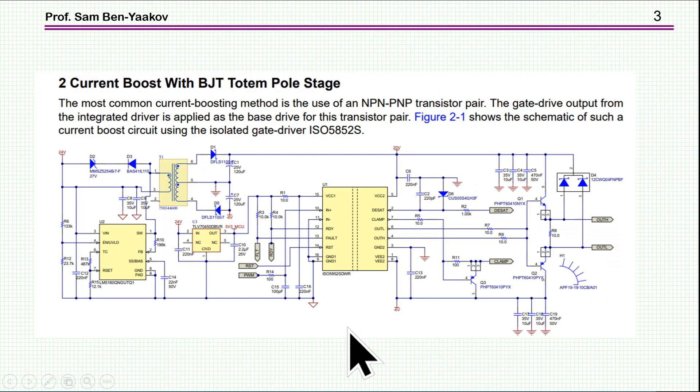Now this application note proposes two approaches for driving a high-power transistor. It's a MOSFET or IGBT. Transistor is here. Gate is here. This is just the driver. So we have here in this one approach a BJT. They call it totem pole, but actually it's not a totem pole, it's a push-pull. Well, this is the least of our worries in this application note. And so there are two transistors, NPN and PNP. This is very conventional.